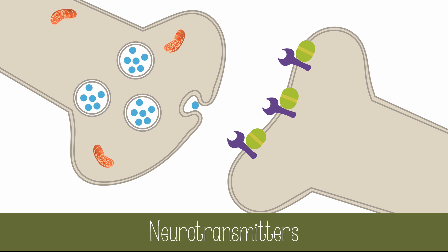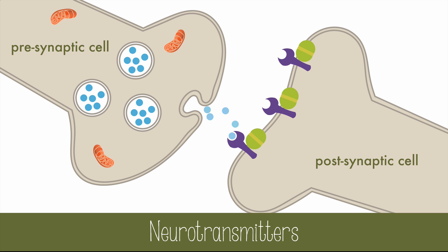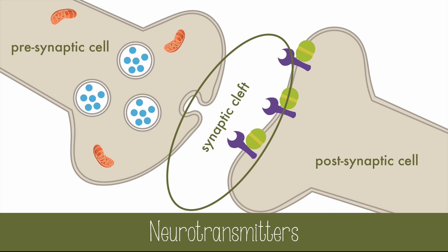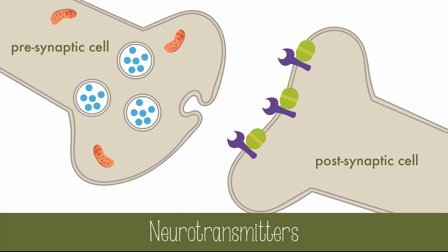The chemicals released into the synapse are called neurotransmitters. Many neurons have a very small fluid-filled gap between the presynaptic cell and the post-synaptic cell. This gap is called the synaptic cleft, and it's only about 20 nanometers wide — a really, really tiny gap.